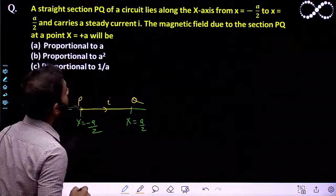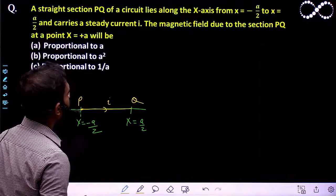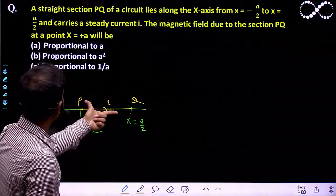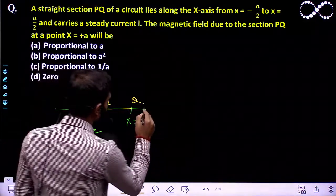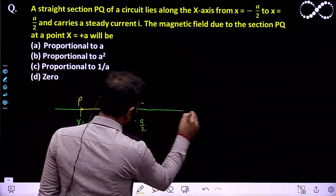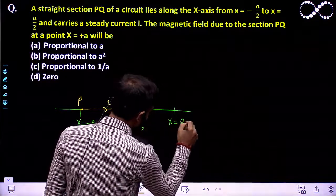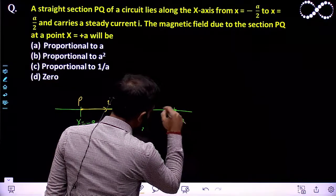Suppose this is a steady current I here. The magnetic field due to this section PQ at point X equals A. It is talking about the point at X equals A. At this point, it is asking about the magnetic field.